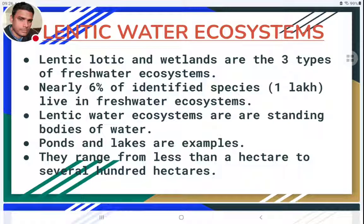Lentic water ecosystems are one type of freshwater ecosystem; the other two types are lotic ecosystems and wetlands. Together, all three types of freshwater ecosystems cover about six percent of identified species — around one lakh species of organisms live in them. Lentic water ecosystems are standing bodies of water where the water does not flow like in rivers and streams; the water is static or stagnant.